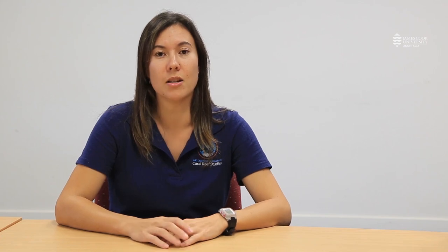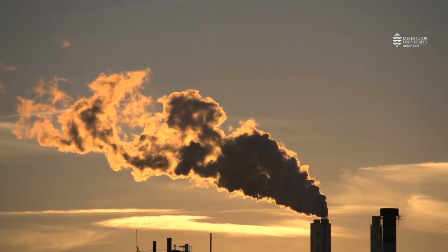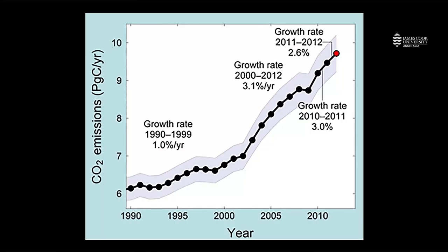We live in a time of really rapid environmental change. Since the Industrial Revolution, about 250 years ago, humans have been putting huge amounts of carbon dioxide into the atmosphere. This comes from the burning of fossil fuels like coal and oil. We're putting CO2 into the atmosphere at an ever-increasing rate, and even in the last 20 years or so, this rate of carbon dioxide emissions caused by humans is steadily increasing.